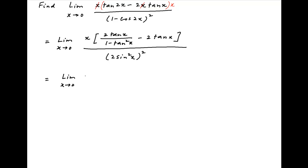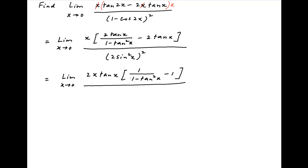Take tan x common in the numerator. Therefore this limit becomes limit x tends to 0, 2x times tan x times [1 upon (1 minus tan²x) minus 1] divided by 4 times sin x raised to the power 4.